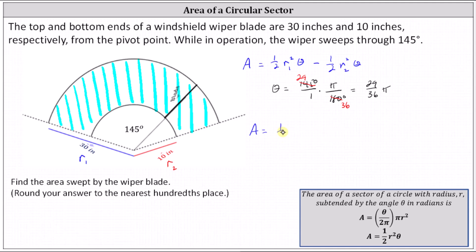The area is equal to one-half times the square of r sub 1, which is the square of 30 inches, times θ in radians, which is 29 divided by 36 π radians.